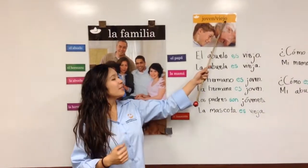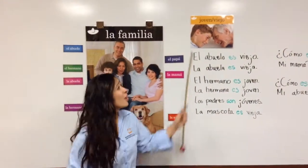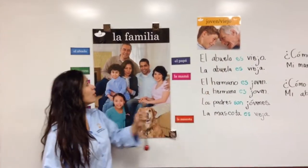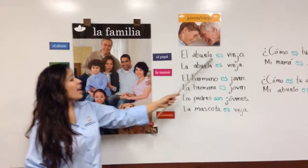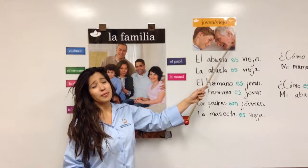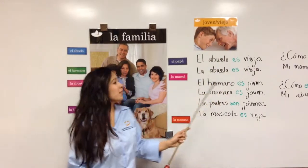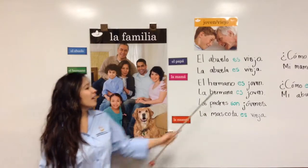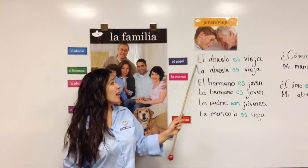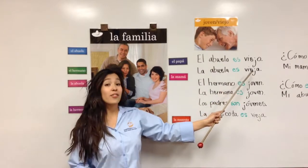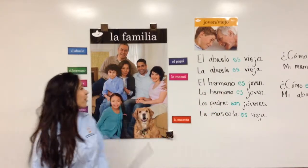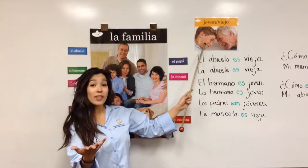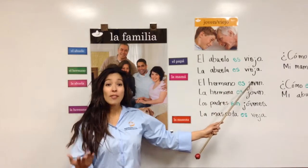Joven y viejo. El abuelo es viejo. La abuela, la abuela es vieja. El hermano, el hermano es joven.